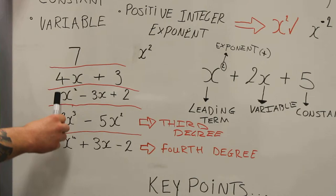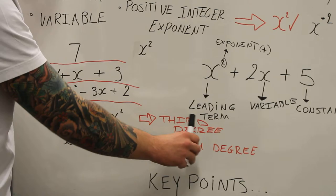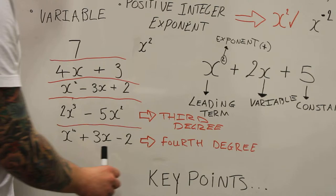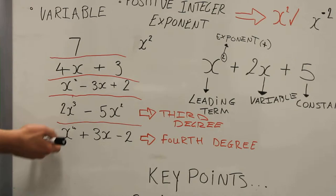What can we tell from the leading term? Well, we can decipher what degree the polynomial expression is. Over here we have x squared minus 3x plus 2. This is a second degree polynomial expression, because it's x to the power of 2.